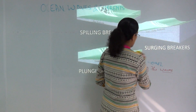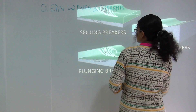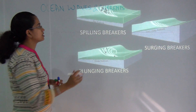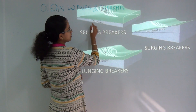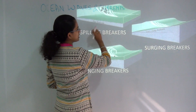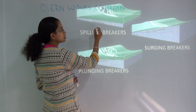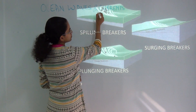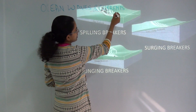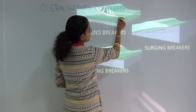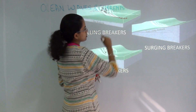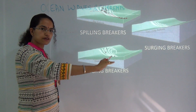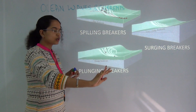The first and most common pattern is spilling breakers. These are usually formed when you have a flat bottom or a very gentle slope. These waves, as they reach the ocean floor, tend to roll down and collapse.